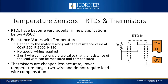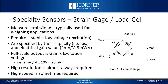With thermistors, resistance also varies with temperature, but they're cheaper, less accurate, and typically have higher resistance values. For strain gauge and load cell type sensors, they measure strain or load, typically used in weighing applications. From the diagram on screen, what you're really looking at is a Wheatstone bridge. You have an input voltage called an excitation voltage. The load cell has a gain associated with it, typically expressed in millivolts per volt, and then it has an output from the bridge, which is what is measured. The full scale output is the gain of the load cell times the excitation voltage, which is typically around 10 volts. High resolution is almost always required because you're usually using low voltage levels.